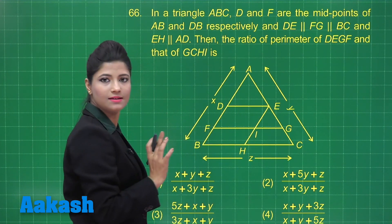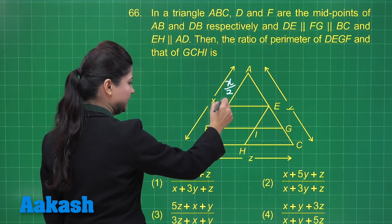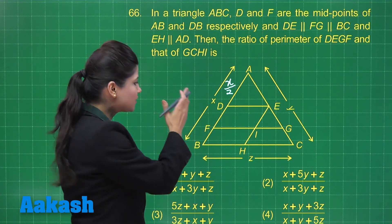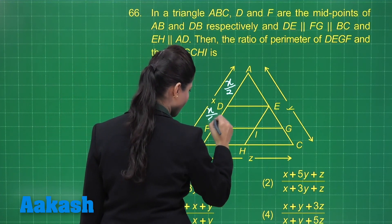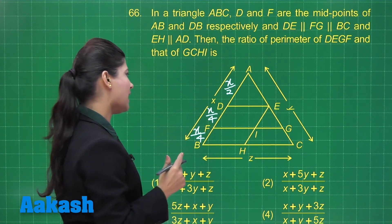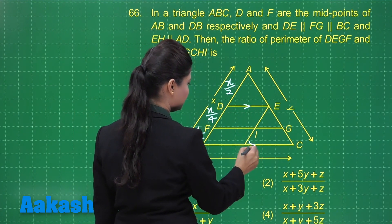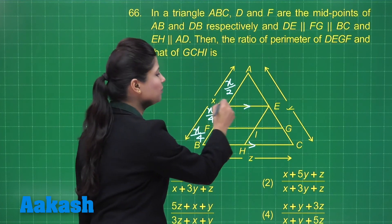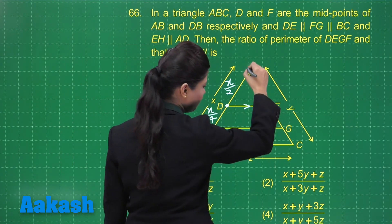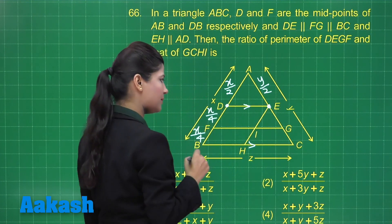Since D is the midpoint of AB, AD = DB = X/2. F is the midpoint of DB, so DF = BF = X/4. Since DE is parallel to BC and D is the midpoint of AB, by the converse of the midpoint theorem, E is the midpoint of AC. So AE = EC = Y/2.